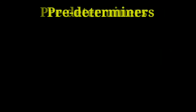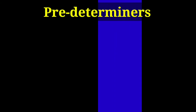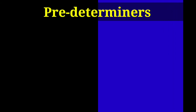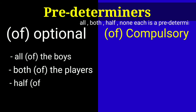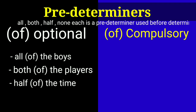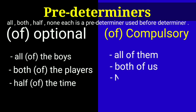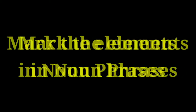Pre-determiners have 'of' constructions which are optional with nouns but obligatory or compulsory with personal pronouns. For example: 'all the boys', 'both the players', 'half the time' — here the 'of' construction is optional. But in 'all of them', 'both of us', 'none of them', 'half of it' — the 'of' construction is compulsory or obligatory.